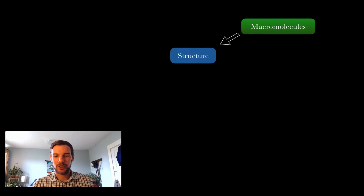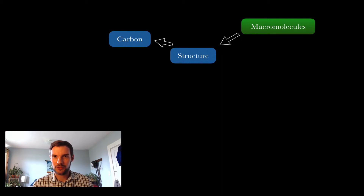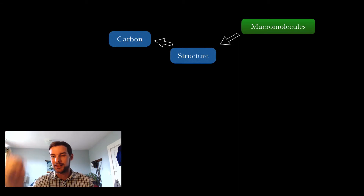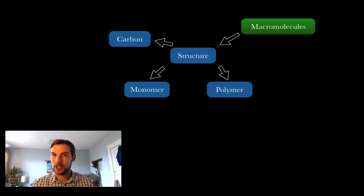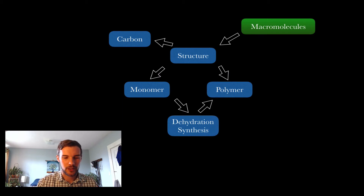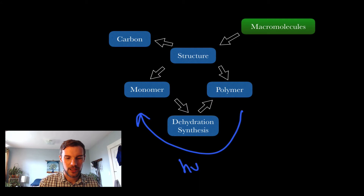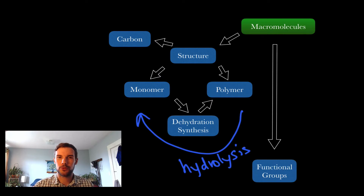In this video we'll talk about the structure of macromolecules. They all contain carbon — if any molecule contains carbon it's called organic, and it doesn't mean it's from some organic farm, it just means it contains carbon. The subunits of macromolecules are called monomers — the single smallest subunit. Going from monomer to polymer (meaning many units) occurs through dehydration synthesis; the reverse reaction is hydrolysis.